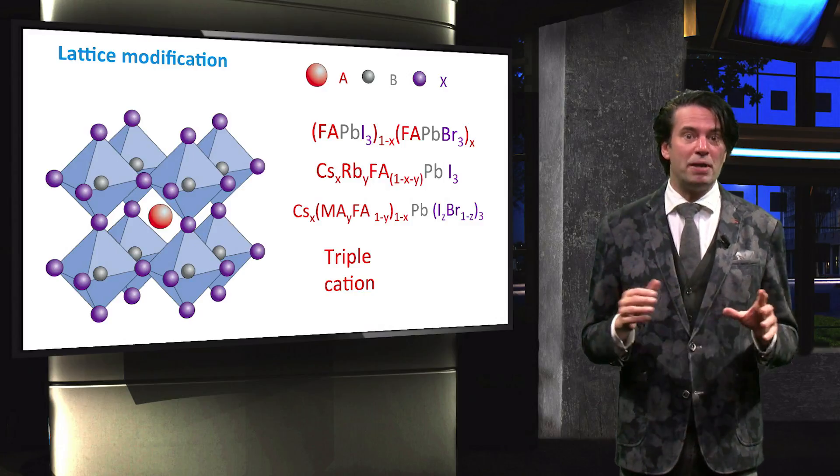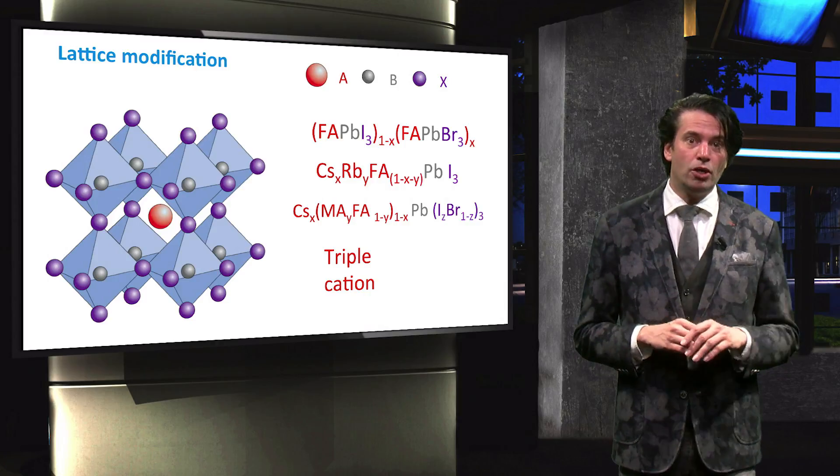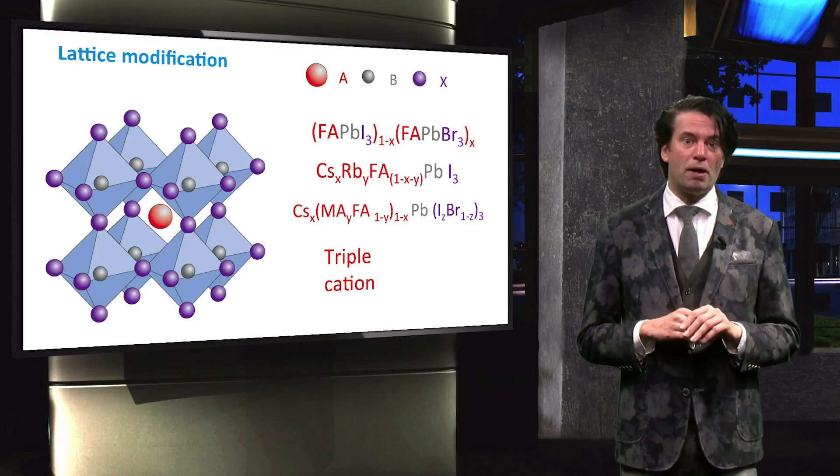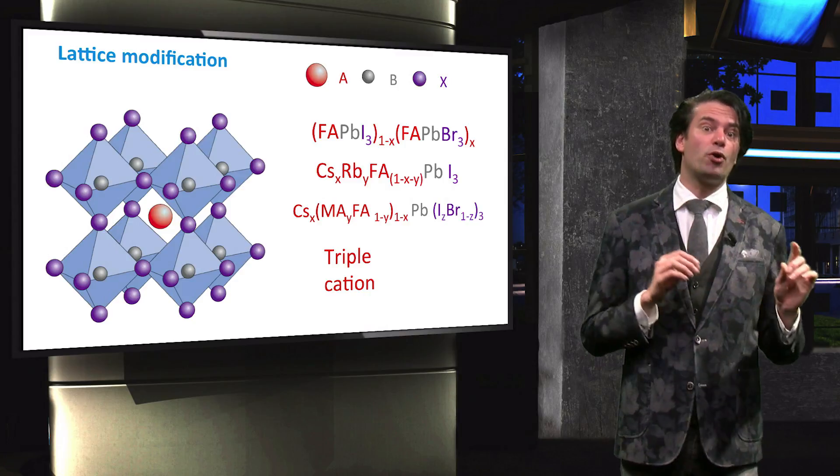The cation can be a mixture of organic and inorganic materials, like caesium, rubidium, methyl ammonium and the formamidium. The halide anion can be a mixture of iodine and bromine.